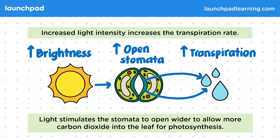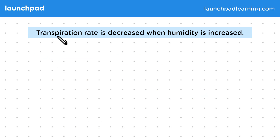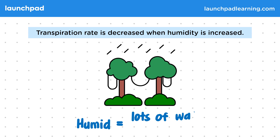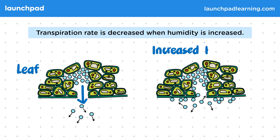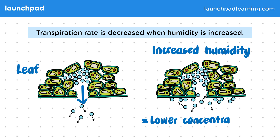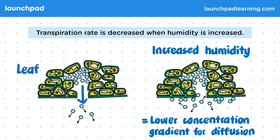So what conditions might decrease the rate of transpiration? Transpiration rate is decreased when humidity is increased. The word humid means that there's lots of water vapor in the air. It can become humid when it's moist and warm, such as if it rains or in places like the rainforest. This diagram shows the bottom surface of a leaf with an open stoma and water molecules. Water vapor that evaporates from the leaf diffuses out through the stomata due to a concentration gradient. In increased humidity, there is a lower concentration gradient for diffusion between the leaf and the air, as there's a higher concentration of water molecules around the leaf.